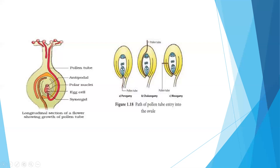When the pollen tube penetrates into the ovule through the micropyle, it is known as porogamy, and this is the commonest way of entry of the pollen tube. When the pollen tube penetrates into the ovule through the chalaza, it is called chalazogamy. The third way is when the pollen tube penetrates into the ovule through the integuments, which is called mesogamy.